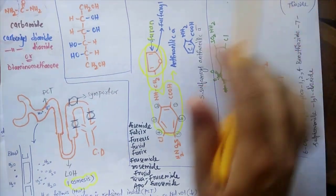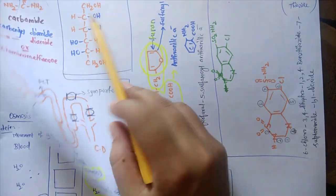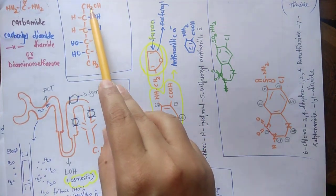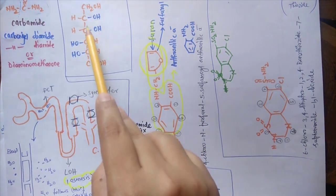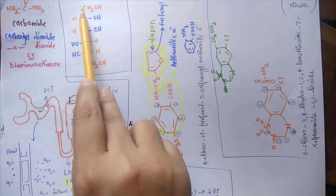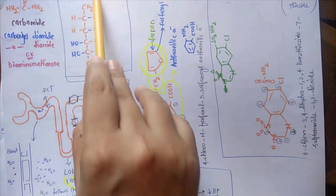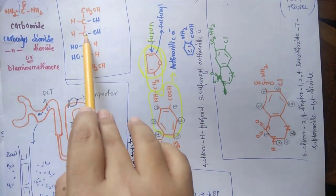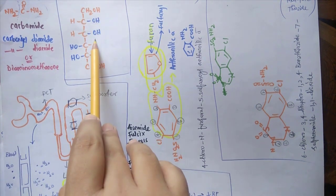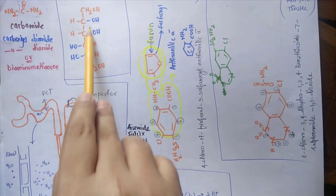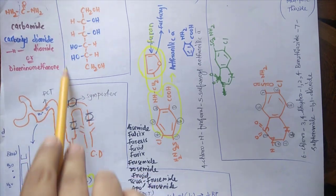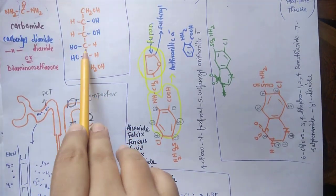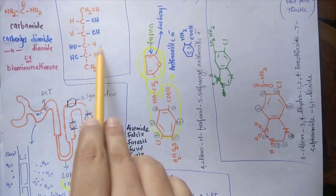The next example is mannitol. The structure is one of the simplest in chemistry — there are six carbons, numbered 1 through 6, with CH₂OH groups. Since it is all hydroxy groups: at the first and second positions there are hydroxyl groups on the right-hand side, and on the left side there are two hydroxyls, with the remaining positions being hydrogen. This is the simplest structure of mannitol.